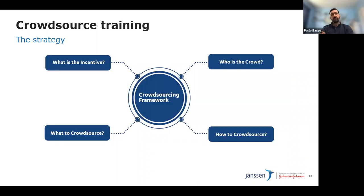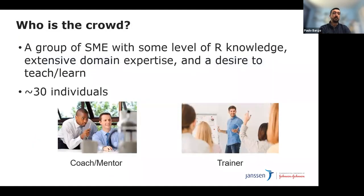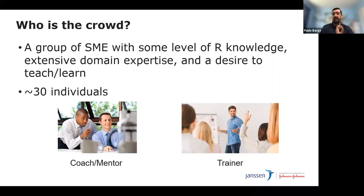Some of the challenges: it's difficult to set aside time, and retaining knowledge is a problem — we didn't want 150 people to complete training and then not use it for two or three months and forget everything. We had to think about a customized curriculum so people could use skills immediately. The crowdsource training strategy has four buckets: who is the crowd, what to crowdsource, how to crowdsource, and what's the incentive. The crowd is really the group of subject matter experts — about 30 individuals with some R knowledge, extensive domain expertise, and a desire to teach and learn.